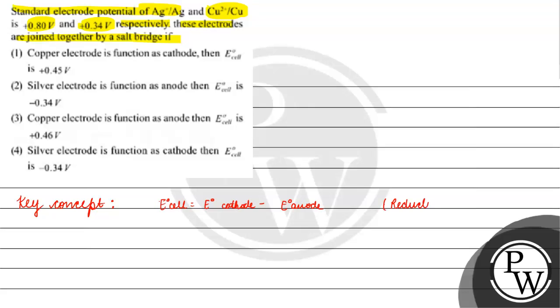Now we have to decide which will undergo oxidation and which will undergo reduction. Silver has 0.80 volt and copper is 0.34 volt, so the one with higher reduction potential will be reduced.